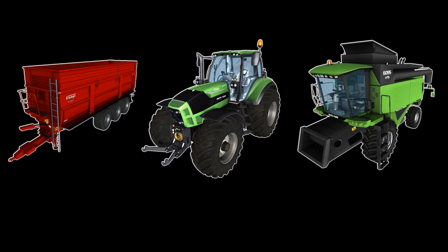First of all, it is important to make sure that we model tractors or machines with a reasonable amount of polygons. Depending on the size, a trailer or equipment should preferably be made up of less than 15,000 triangles. In case of a tractor, we should not use more than 25,000 triangles.